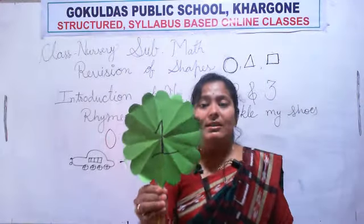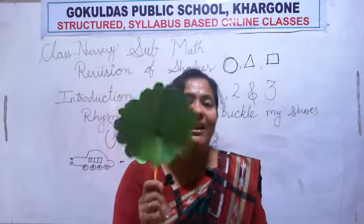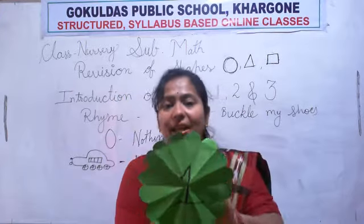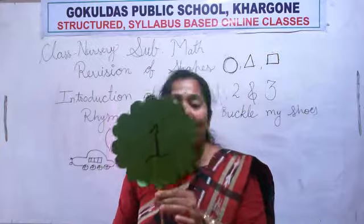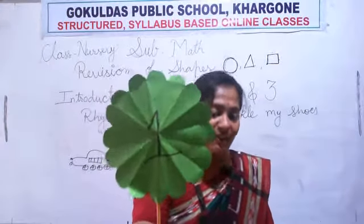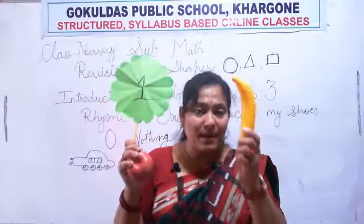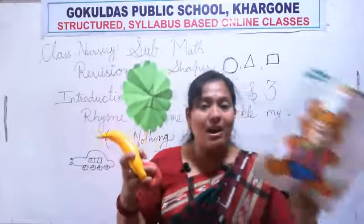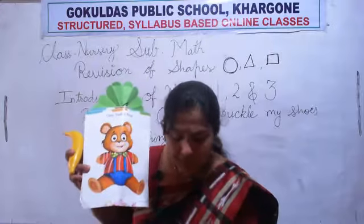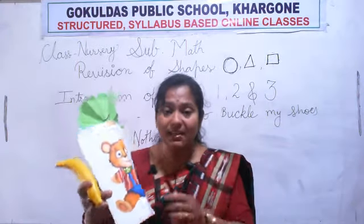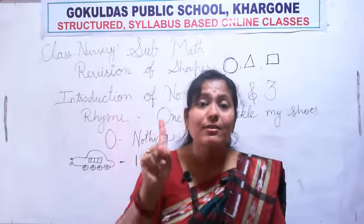Now see here — how many flowers in my hand? One flower. Repeat after me: one flower. One. One flower, one apple, one banana, one teddy bear, one stick.